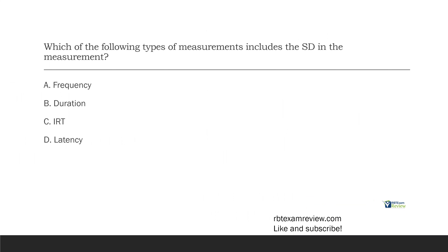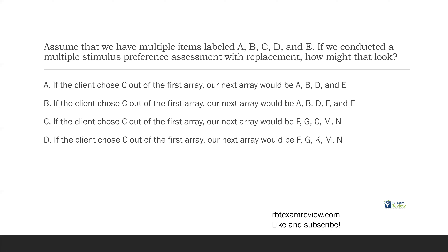Question two: assume that we have multiple items labeled A, B, C, D, and E. If we conducted a multiple stimulus preference assessment with replacement, how might that look? Don't be overwhelmed — at first glance this can look like a very overwhelming question. Let's slow down and think about what the question wants to know. We're going to take an array of three or more items, present them to a client. When the client picks one, we are going to put that item back and replace the other items, because it's a multiple stimulus assessment with replacement.